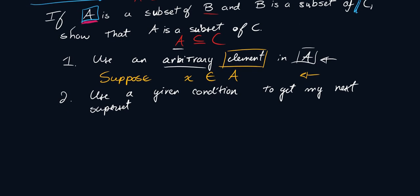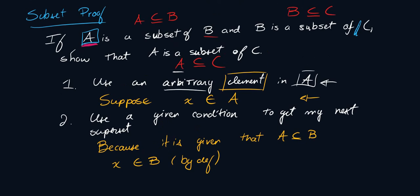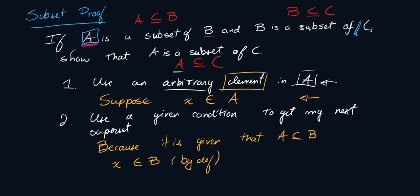So what that means is I have suppose that X belongs to A because it is given that A is a subset of B, we can now say that X belongs to B. By definition, if A is a subset of B, then whatever is in A is also going to be in B. So that's my second step.